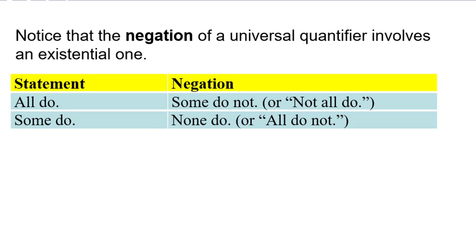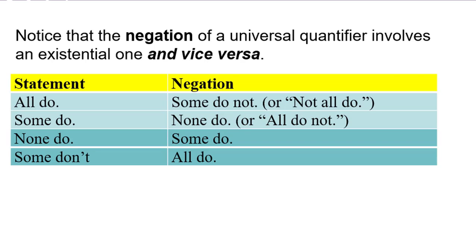Notice that when we found our negations, the negation of a universal quantifier involved an existential one. If I want to negate 'all do something,' I would say 'some of them don't.' If I want to negate 'some do something,' I would say 'none of them do,' and vice versa.